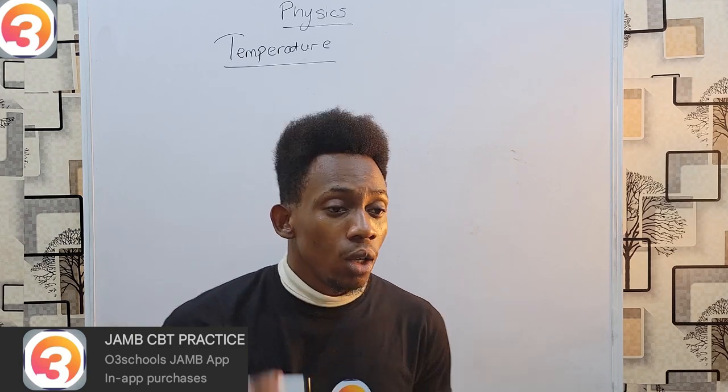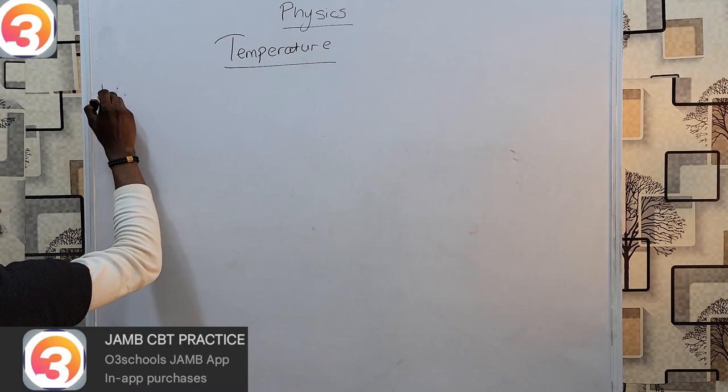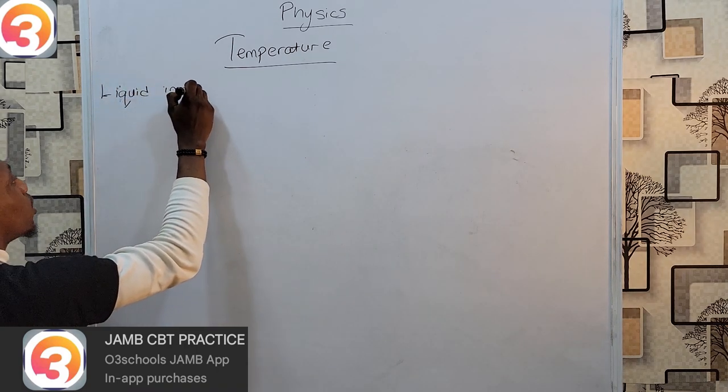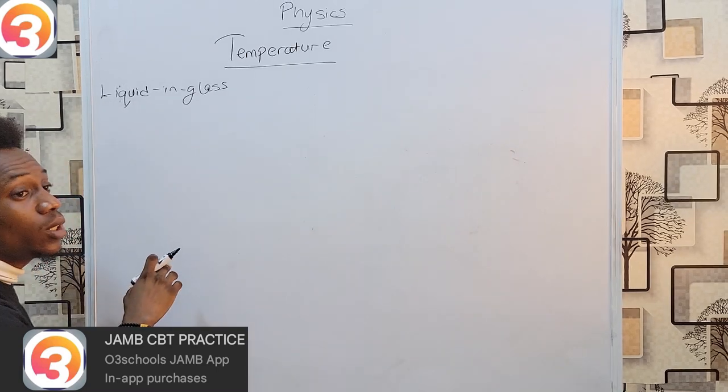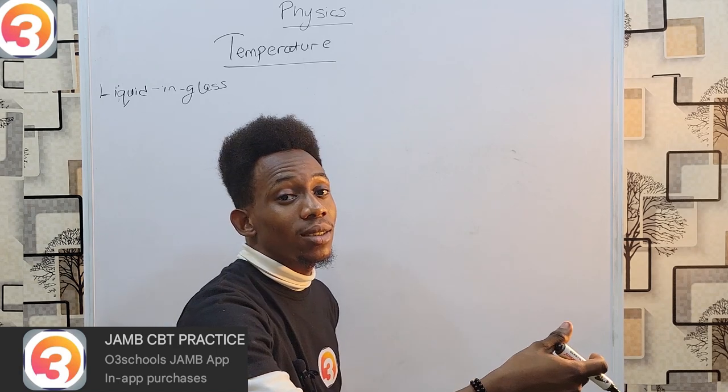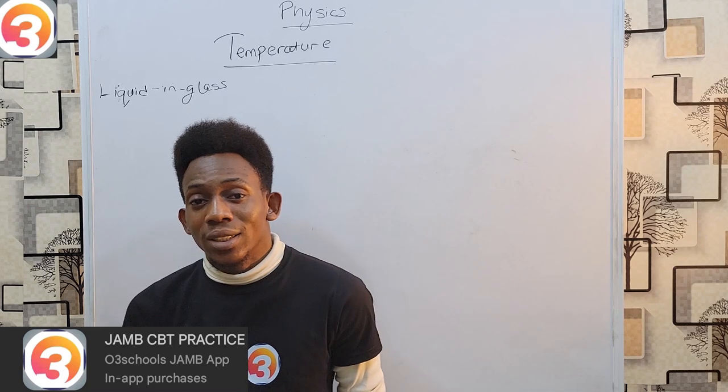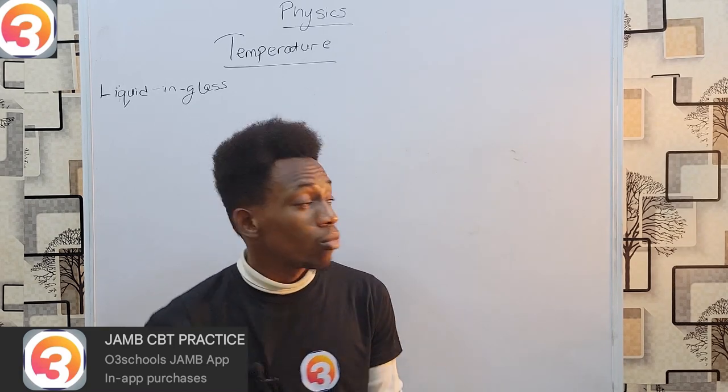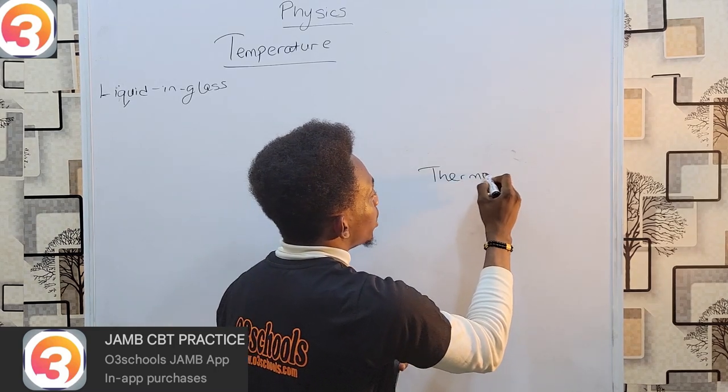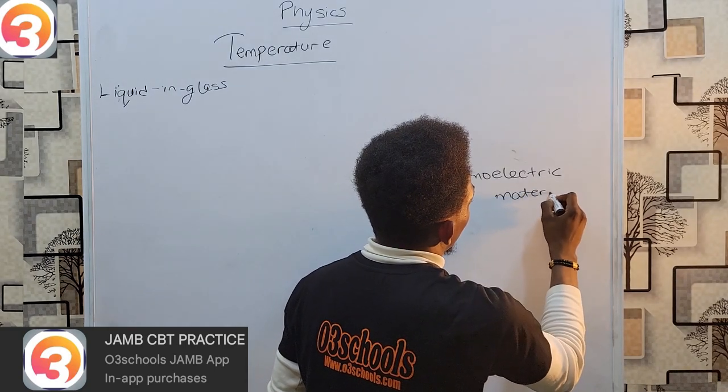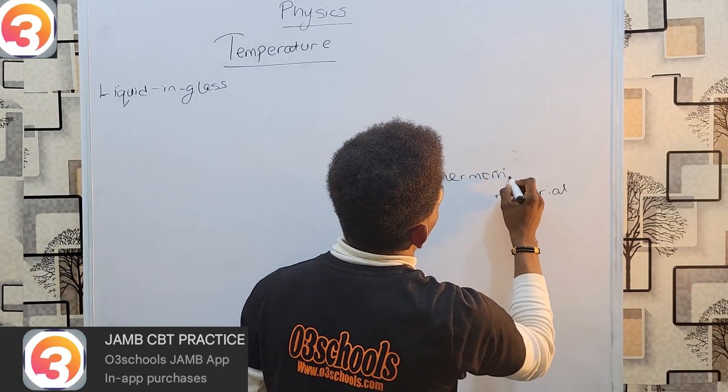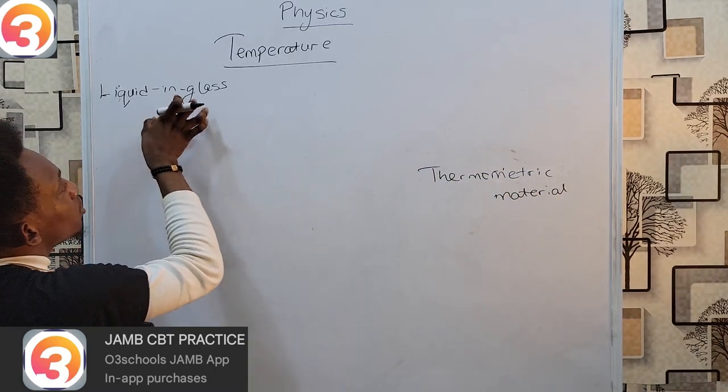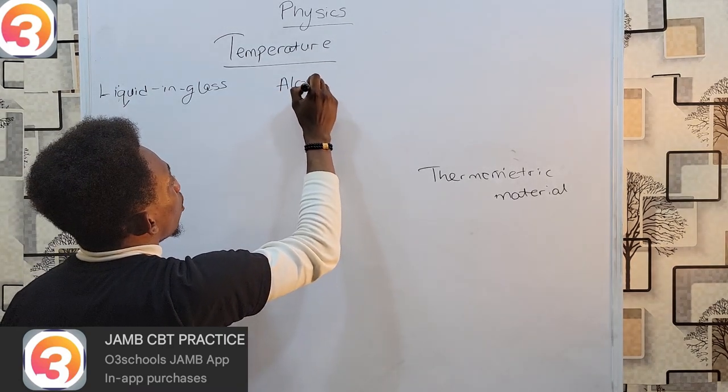The instrument we use to measure temperature is the thermometer. Now thermometers come in many types and forms. The most common ones we have are the liquid in glass thermometers. This liquid in glass thermometer measures the change in the volume of a liquid with temperature. Every thermometer has a thermometric material, a property that changes with temperature. For liquid in glass thermometers, the thermometric material is usually either alcohol or mercury.